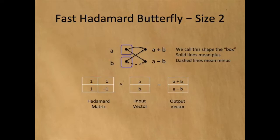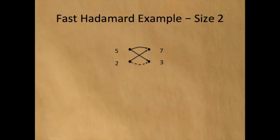The fast Hadamard butterfly of size 2 combines two butterflies of size 1, as shown in blue. The solid lines mean add, and the dashed lines mean subtract. If we have an input vector of 5, 2, then the Hadamard transform will be 7, 3. 5 plus 2 equals 7, and 5 minus 2 equals 3.